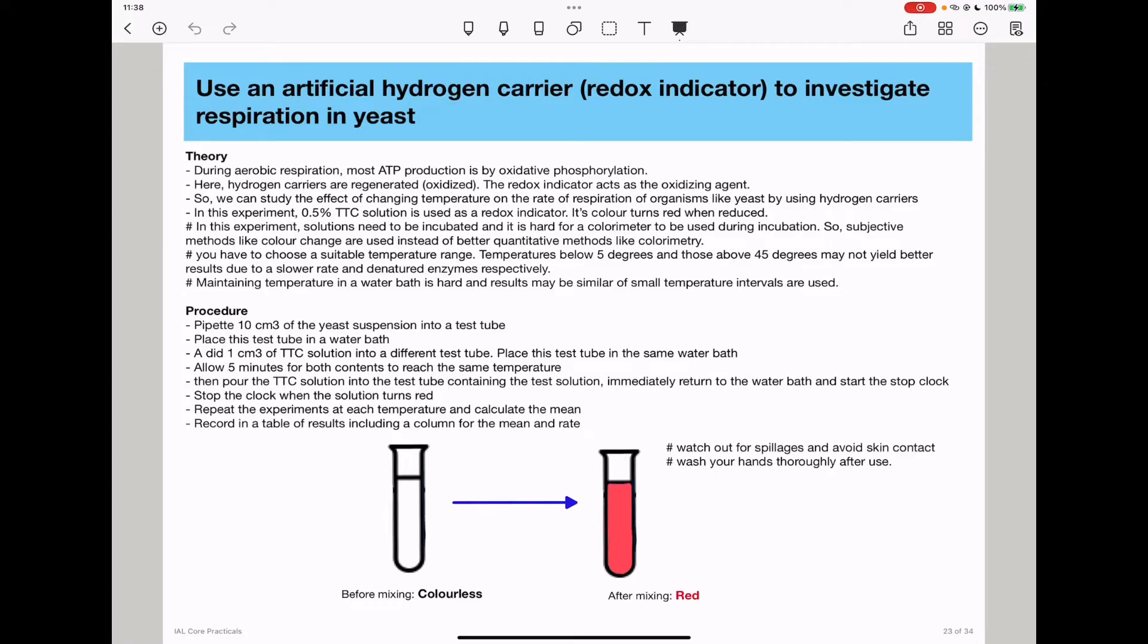So we study the effect of changing temperature on the rate of respiration of organisms, like yeast, by using hydrogen carriers. And again here, TTC solution is used as a redox indicator. Its color changes from colorless to red.